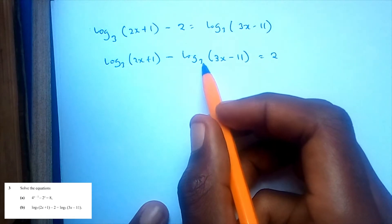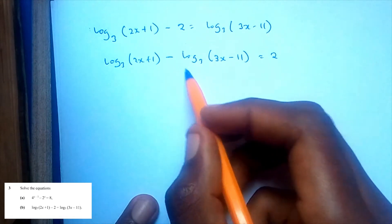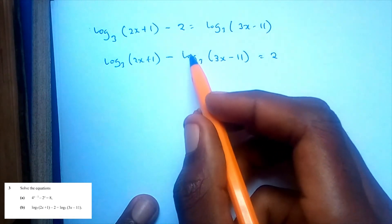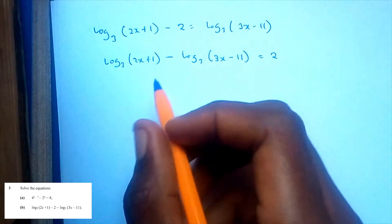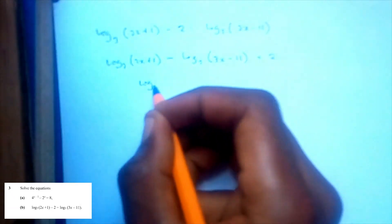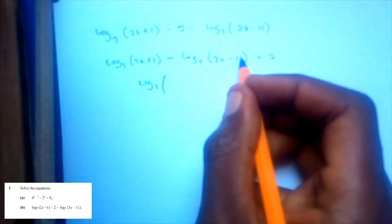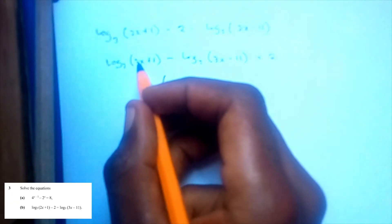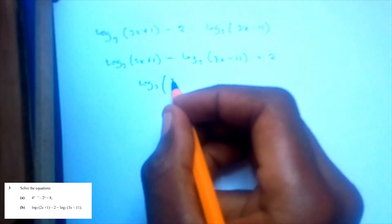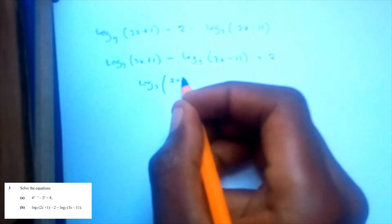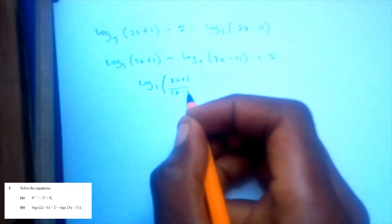There's a logarithm rule that says when you subtract logs of the same base, you can rewrite it as the log of a fraction. So this becomes log base 3 of (2x plus 1) over (3x minus 11) is equal to 2.